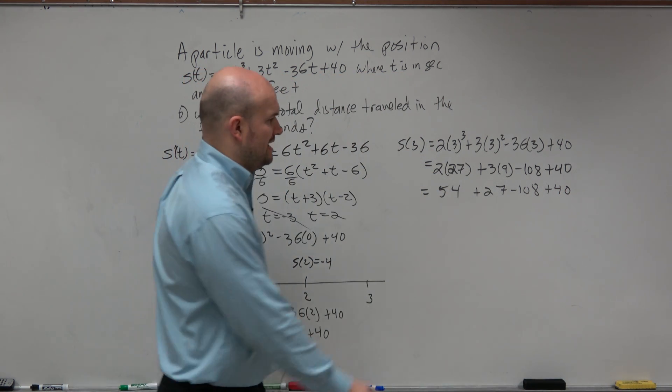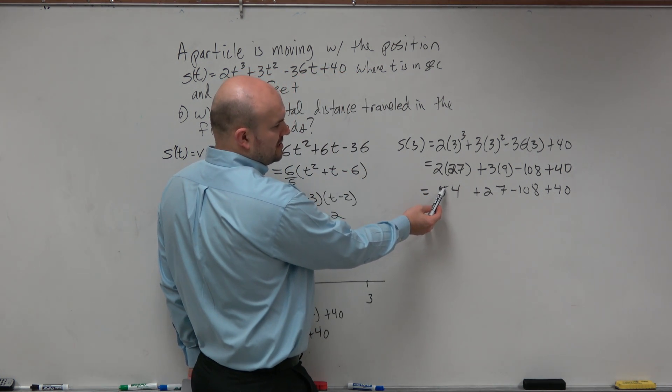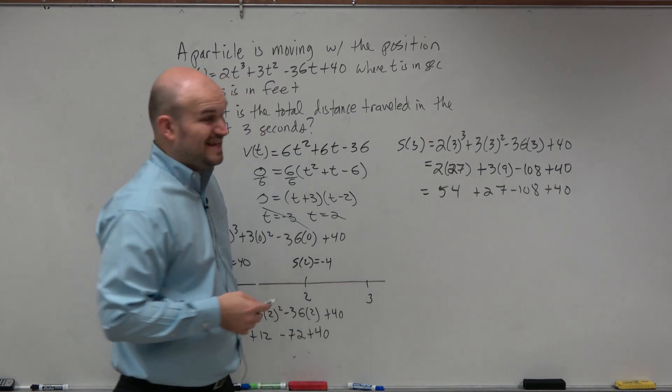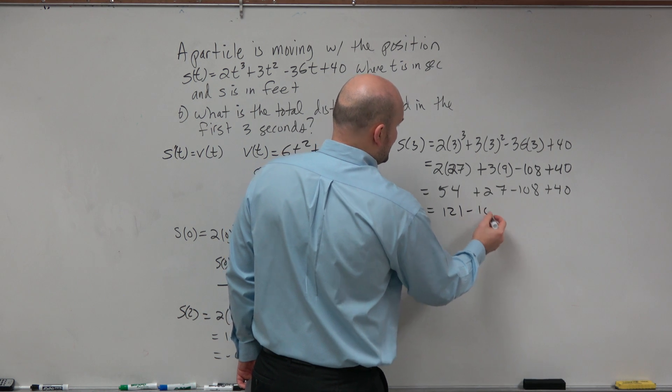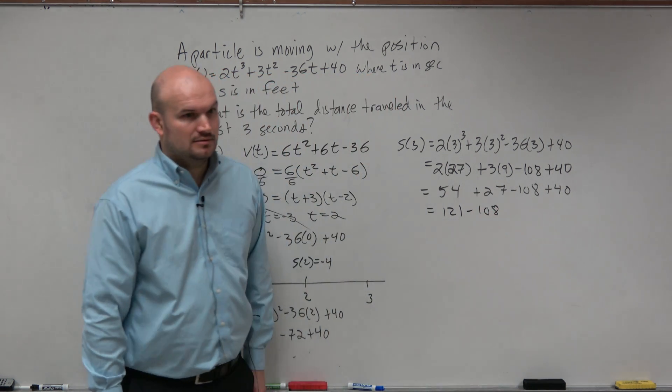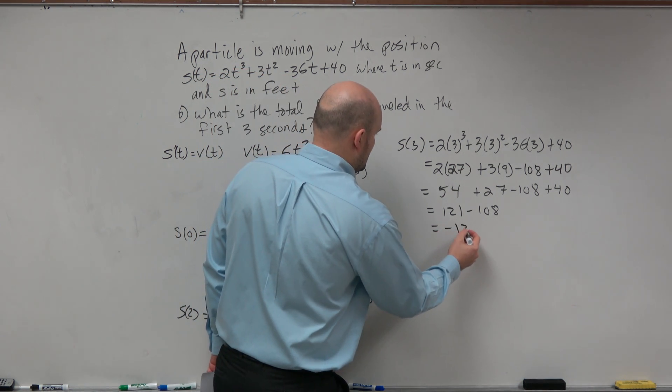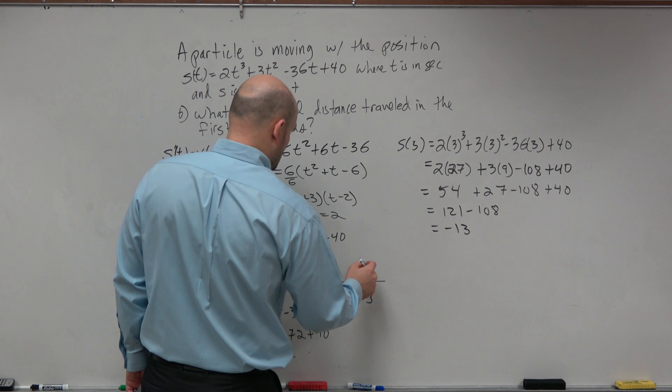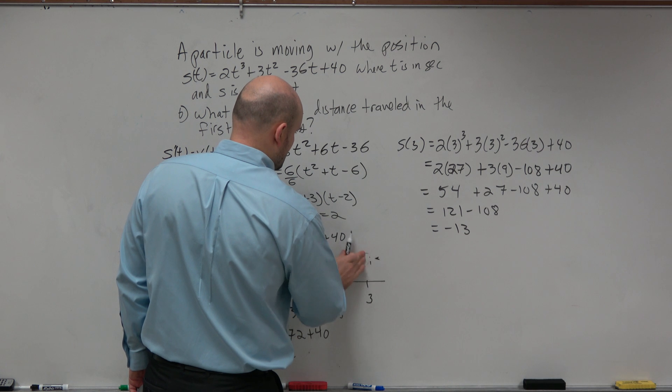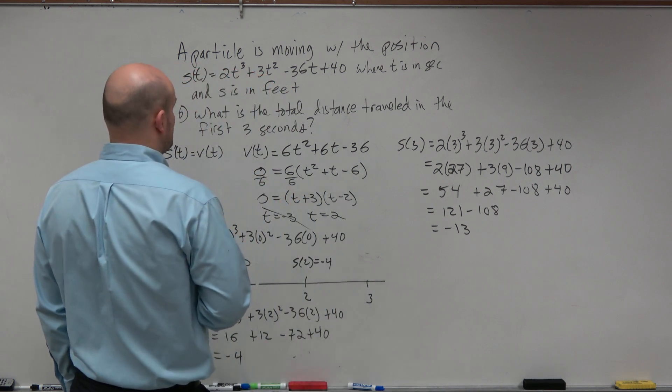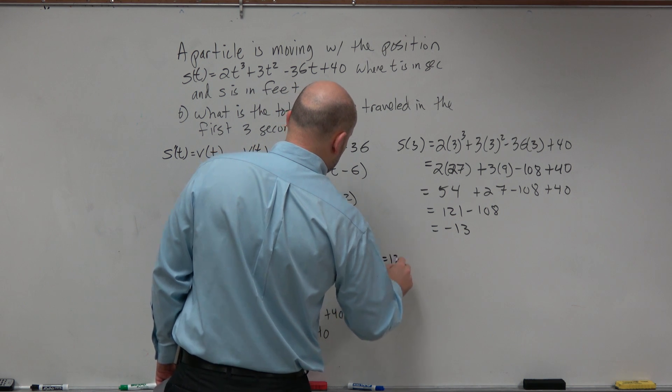Let's go ahead and combine all my positives together and kind of see where that gives up. So this one becomes 54 plus 27 is going to be 81, plus 40 would be 121 minus 108. Does everybody follow? And therefore, that equals positive 13. Thank you. So now we can say s of 3 equals positive 13.